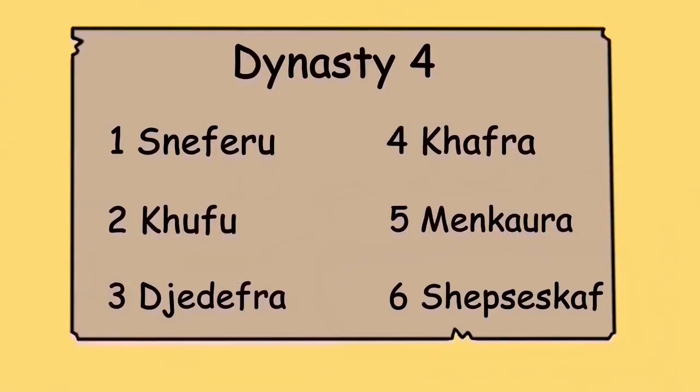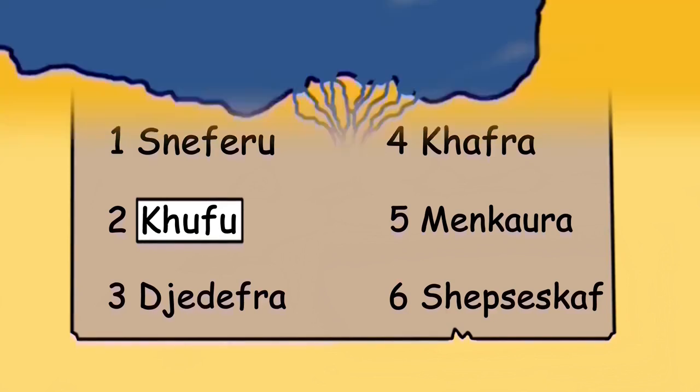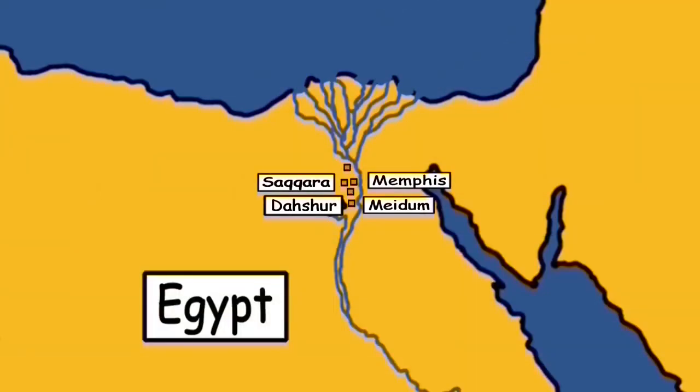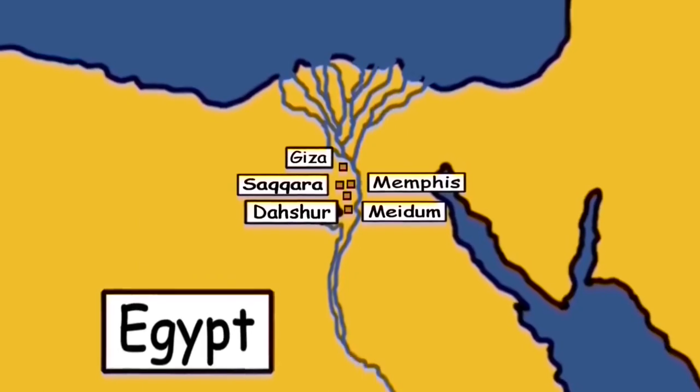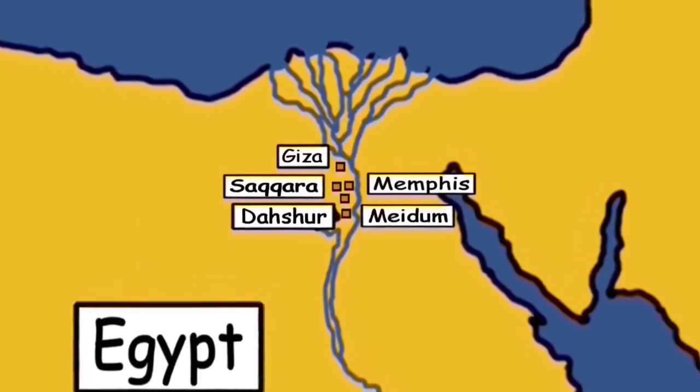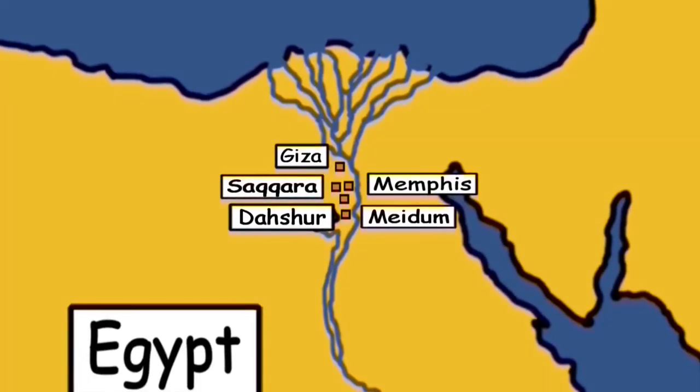And Sneferu's son and successor, the Pharaoh Khufu, would use that knowledge to build the biggest pyramid of them all. The site he chose to build on was Giza. It was perfect. The bedrock was solid enough to take the weight needed, and there was plenty of stone nearby to quarry. Also, at that time, the Nile flowed right by Giza, so any additional materials and supplies needed could arrive easily by boat.